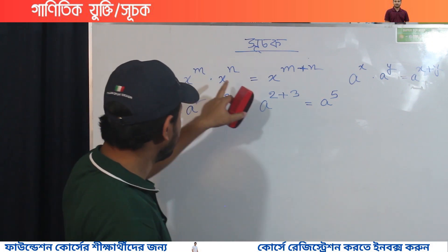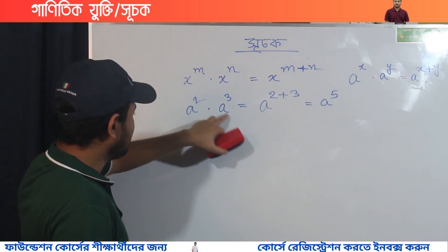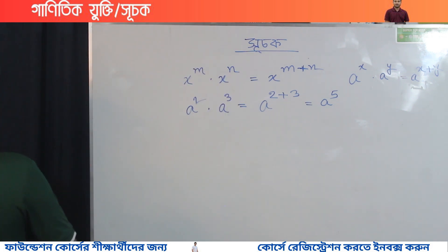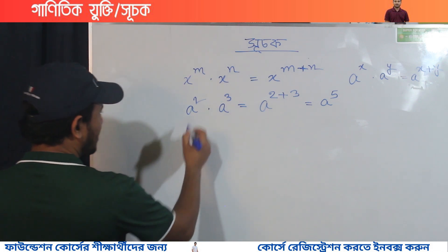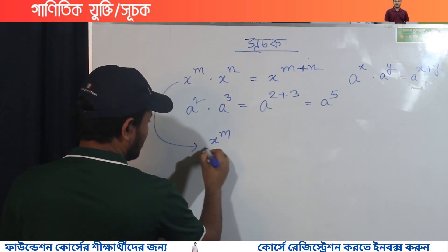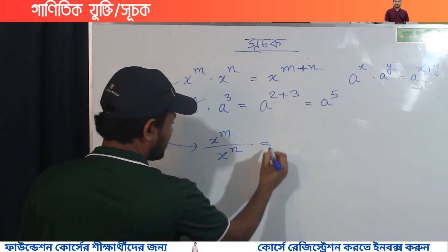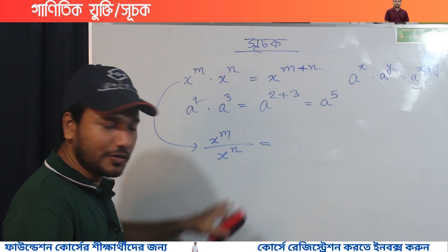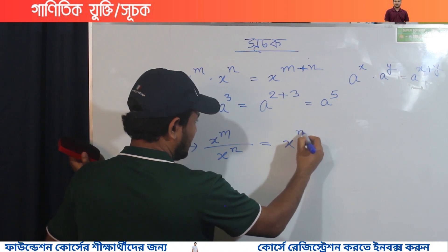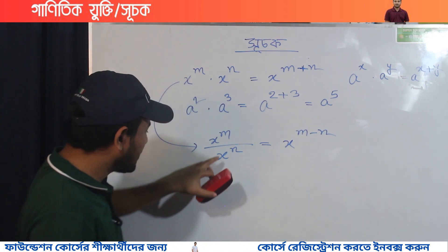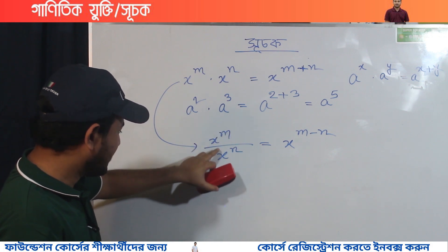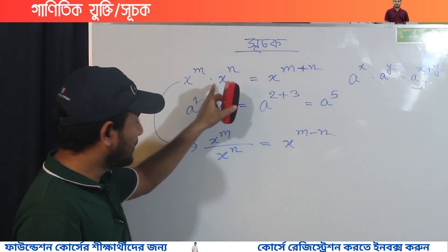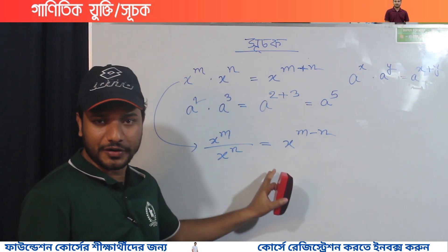This is 5. The second law: x to the power m divided by x to the power n equals x to the power m minus n.